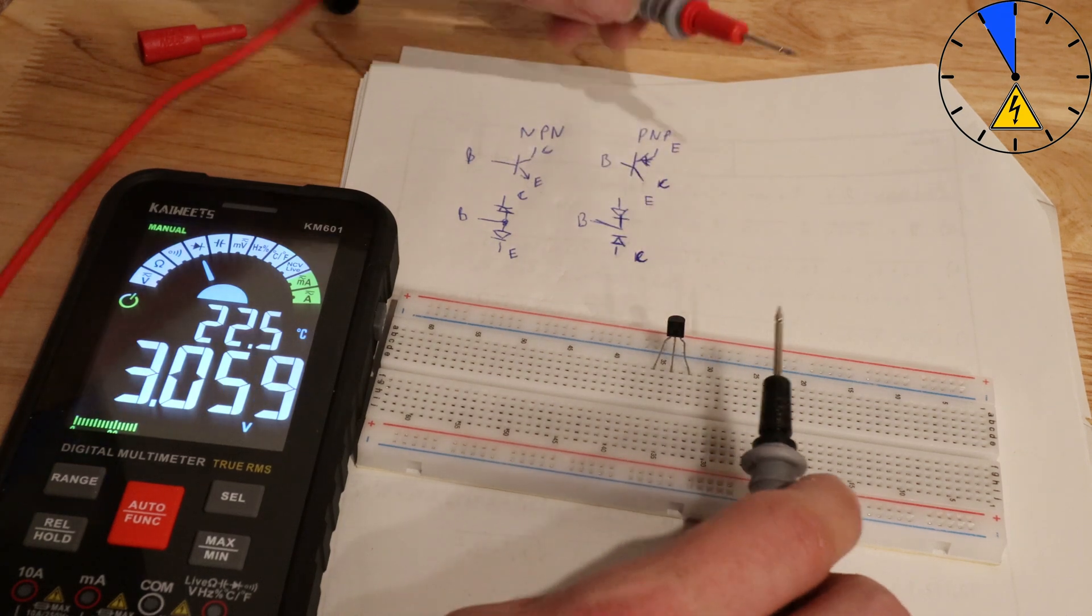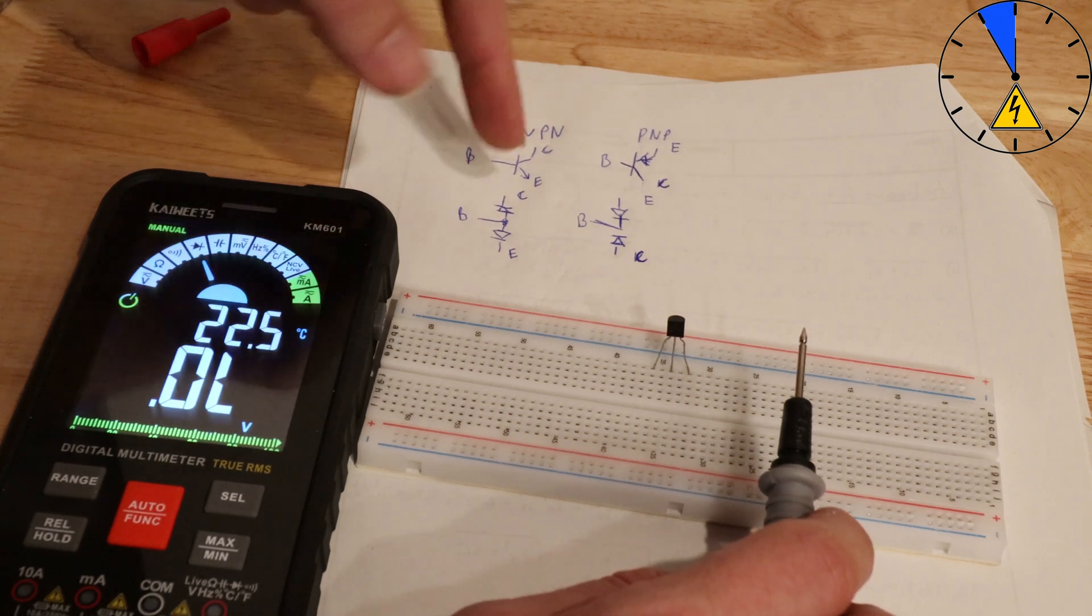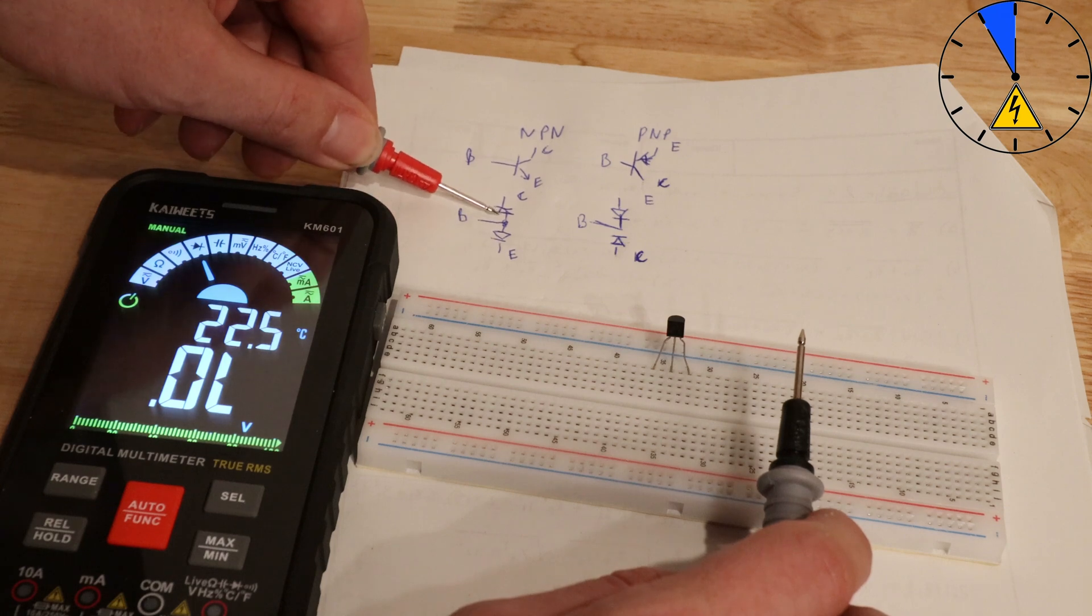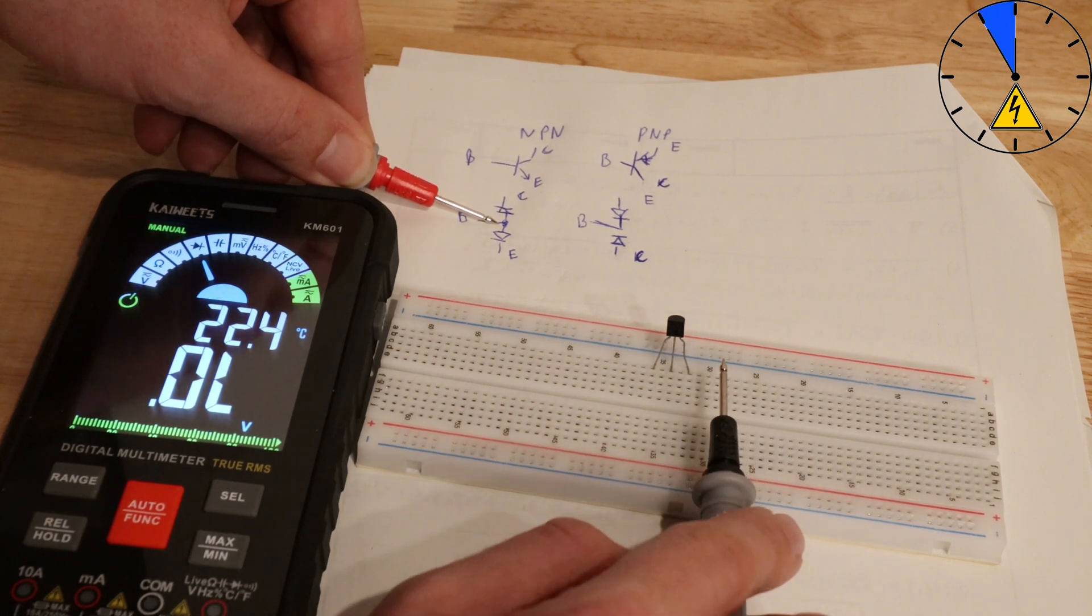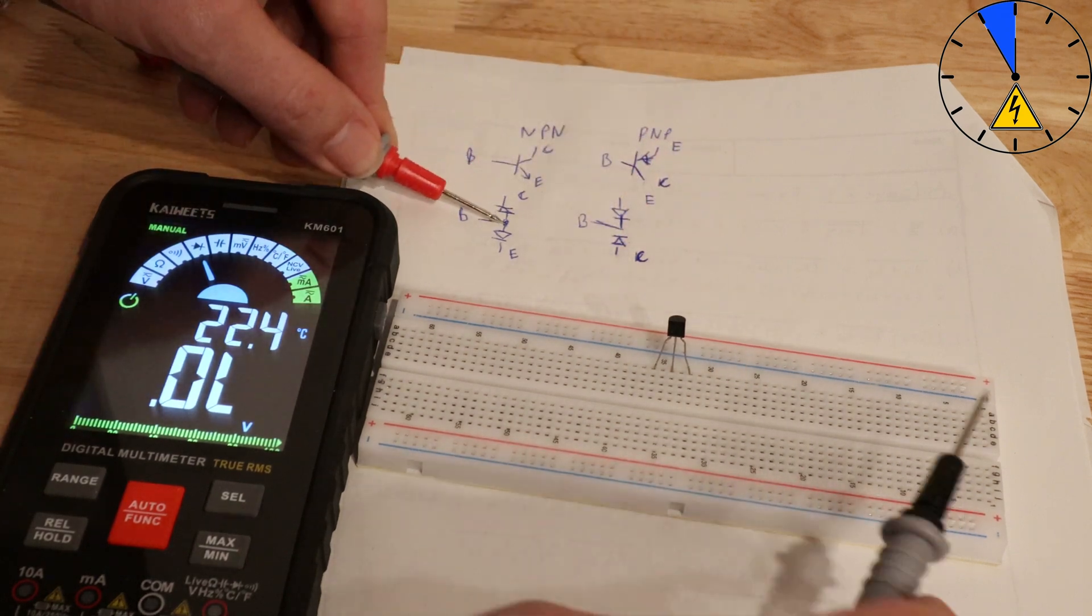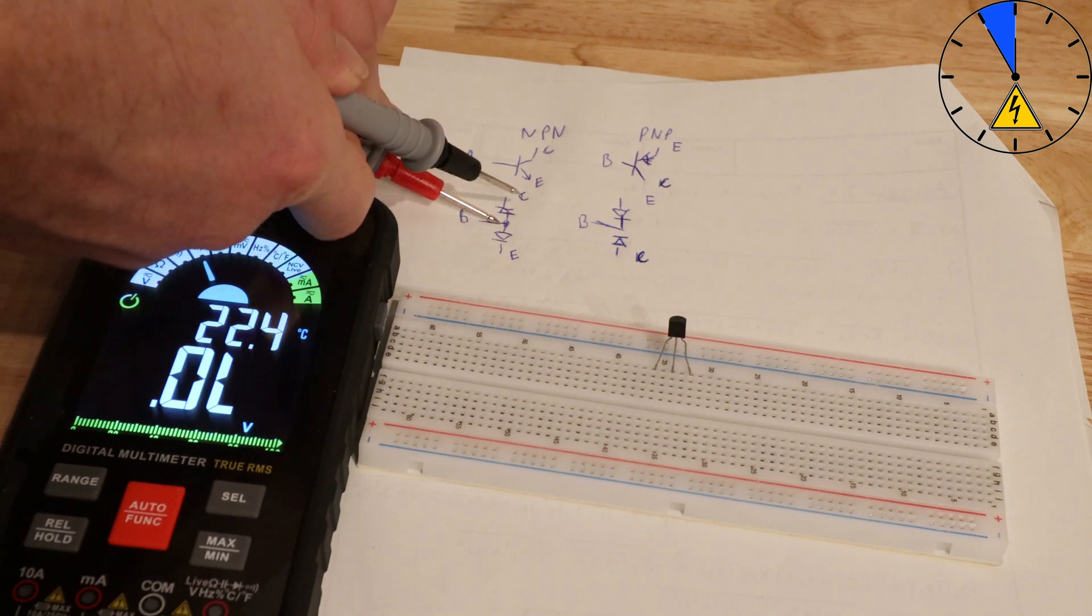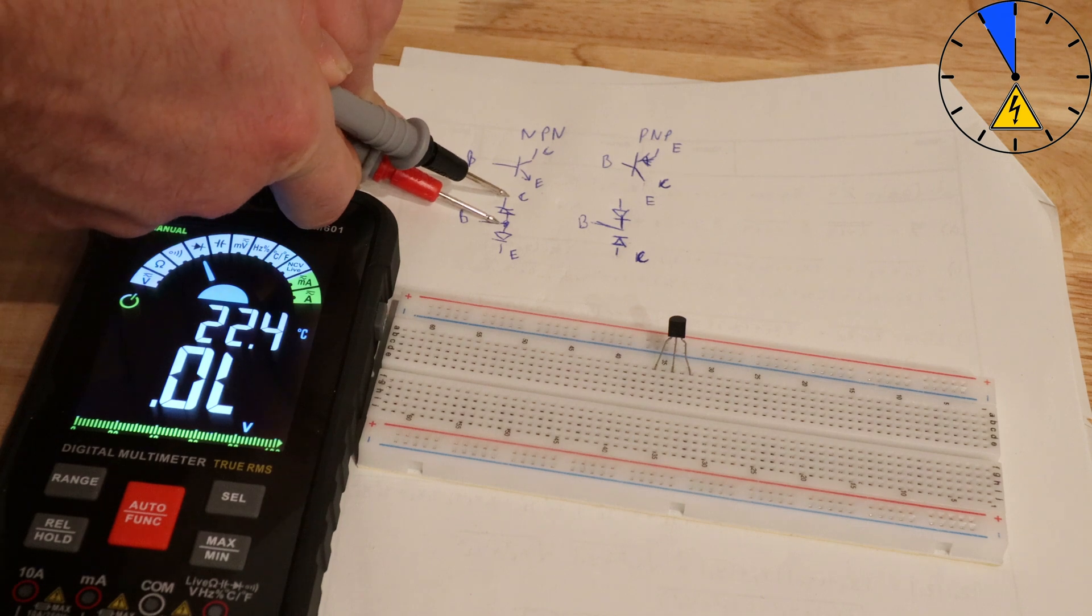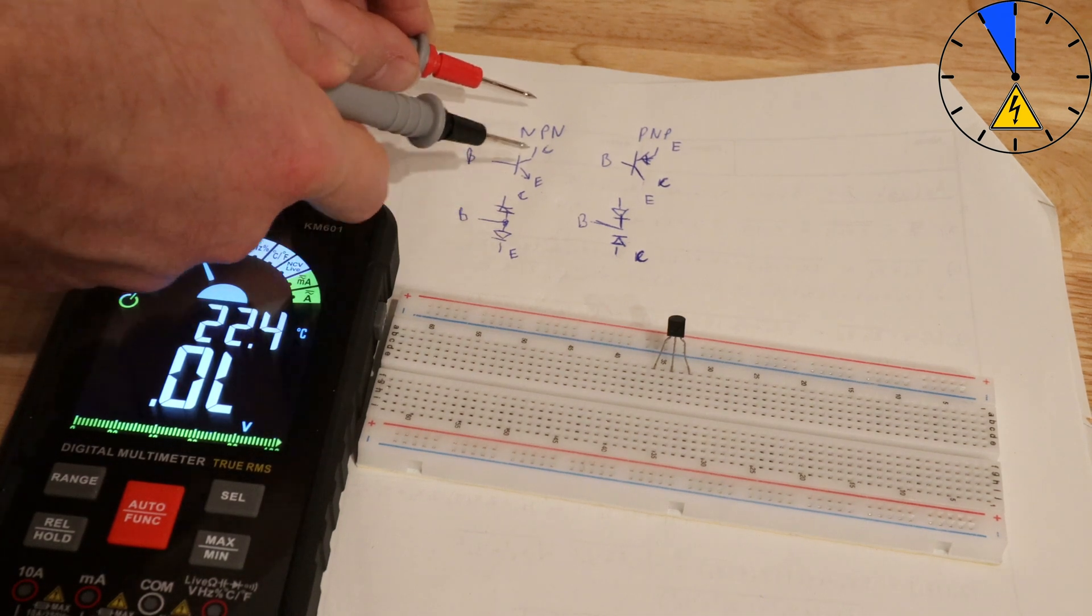Now if I have an NPN transistor I will be here at this point between these diodes with my plus, and now I am measuring here from here to here. And now if I measure from here to here and there is a similar voltage, then I know it is an NPN.